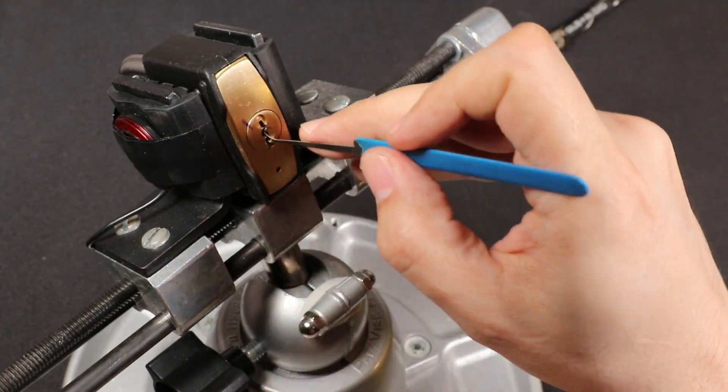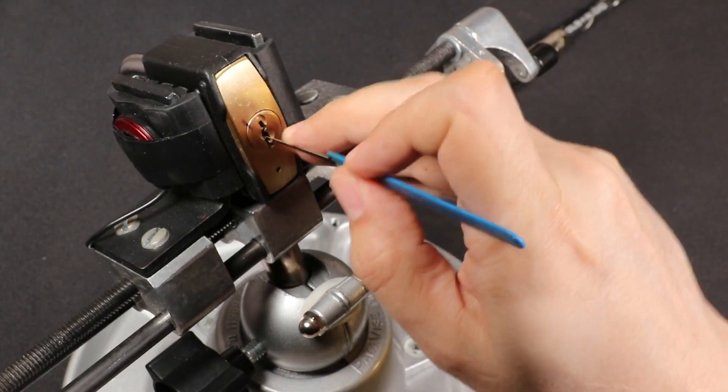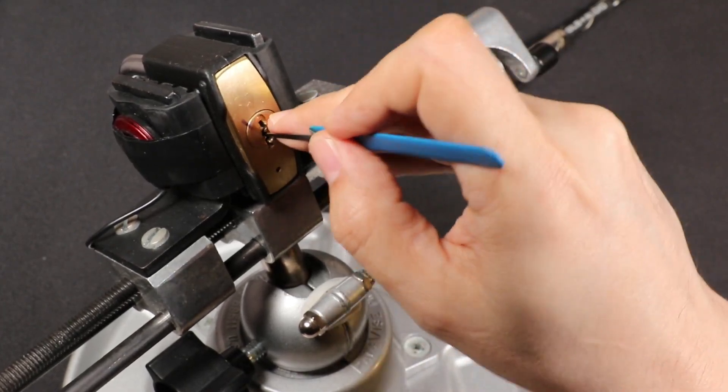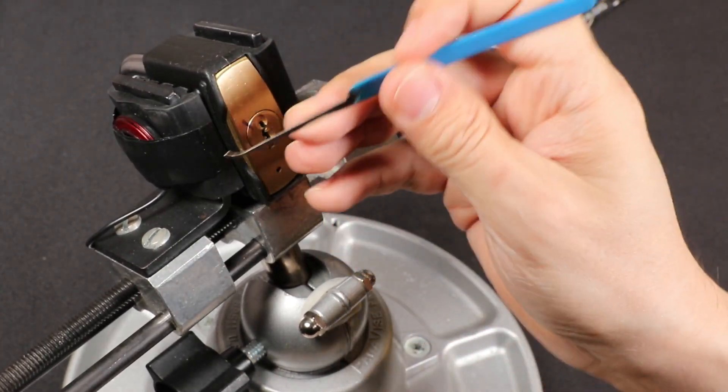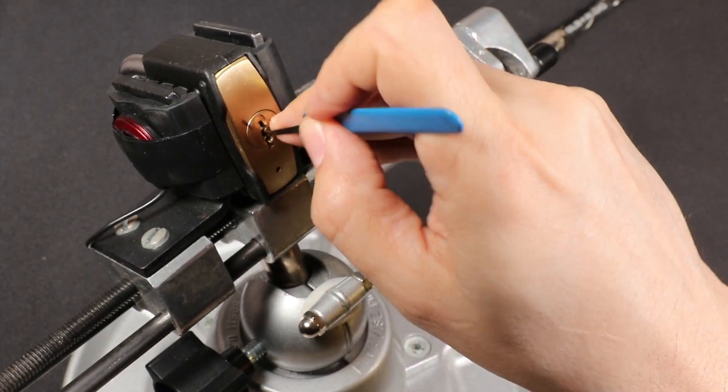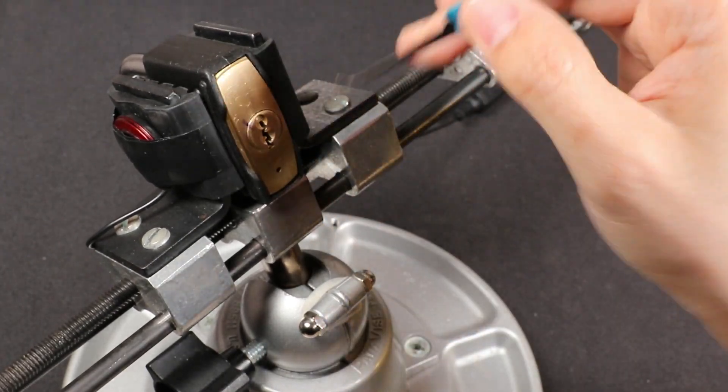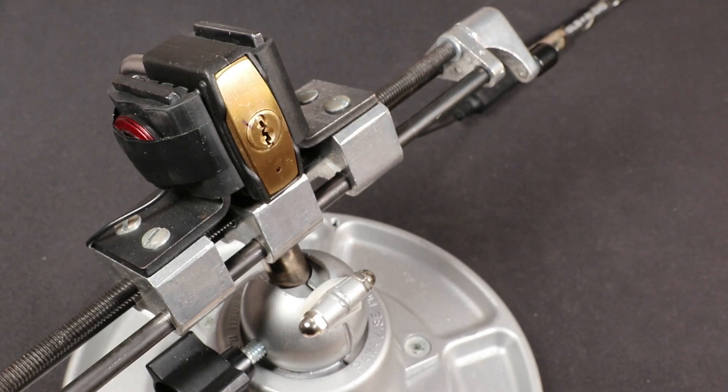This thing has some warding in here that is quite effective. When you go to lift different pins, it mutes the feedback because even with this really thin pick, you're rubbing against warding on left and right.